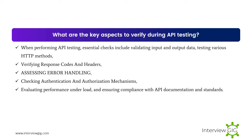What are the key aspects to verify during API testing? When performing API testing, essential checks include: validating input and output data, testing various HTTP methods, verifying response codes and headers, assessing error handling, checking authentication and authorization mechanisms, evaluating performance under load, and ensuring compliance with API documentation and standards.